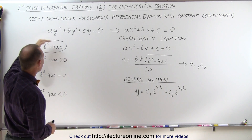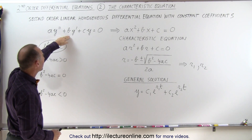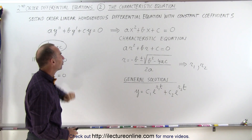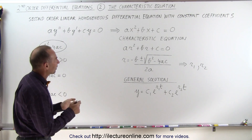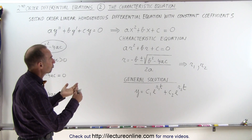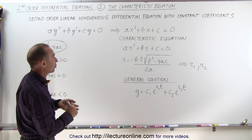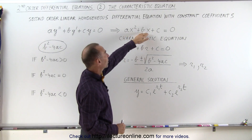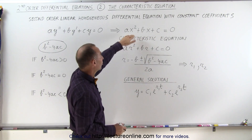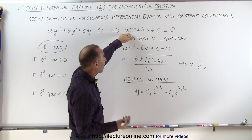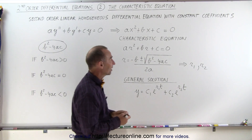The general form is AY double prime plus BY prime plus CY equals zero. Notice it has a lot of similarity to the algebraic second order equation AX squared plus BX plus C equals zero. Remember that this is the equation of a parabola which may or may not cross the x-axis.